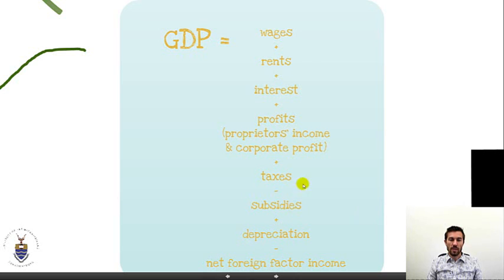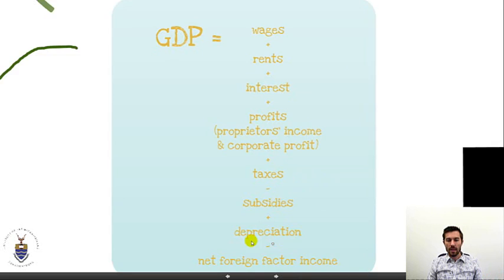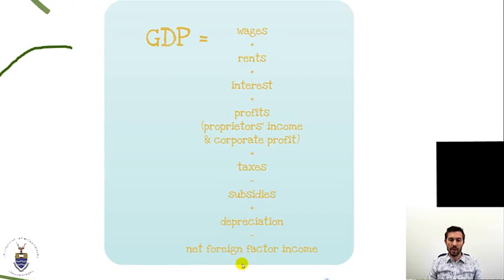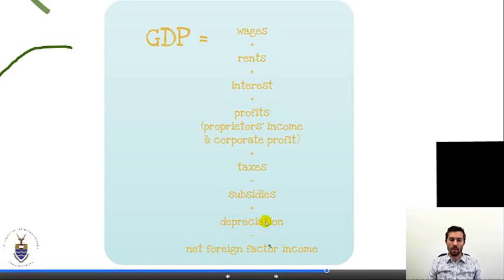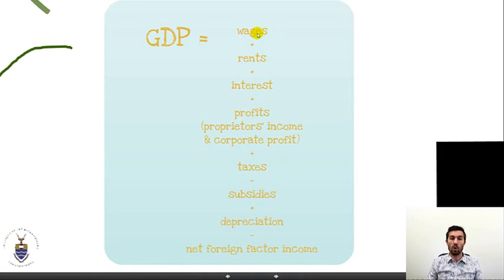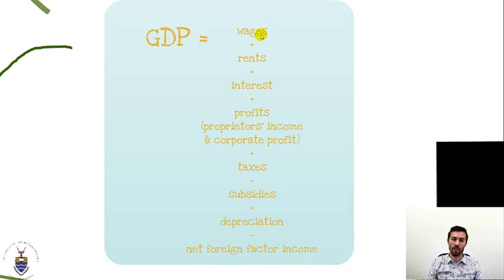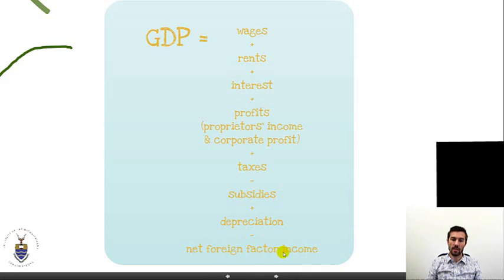We've also got depreciation, which we need to add back in — we can return to that explanation when we talk more about investment. But for now, know that we need to add depreciation back to the income that was earned by households, firms, and government. Then, to be technically correct, we need to subtract net foreign factor income from any wages that were earned. For example, if a South African person earned money for doing work outside of South Africa, that work doesn't form part of South African GDP because it wasn't produced within South Africa, so we need to subtract that amount. But we don't have to worry too much about this one — it's just to be technically correct.